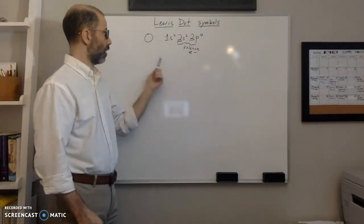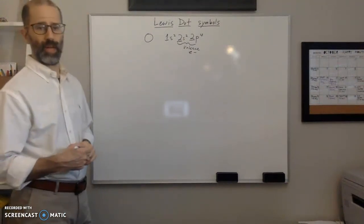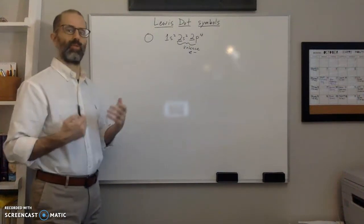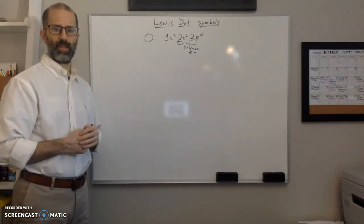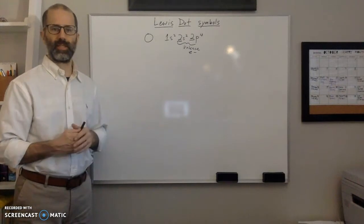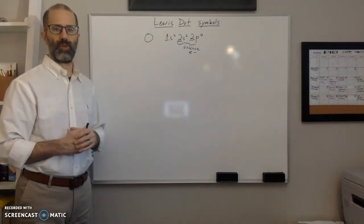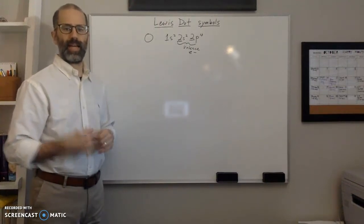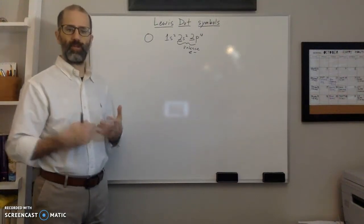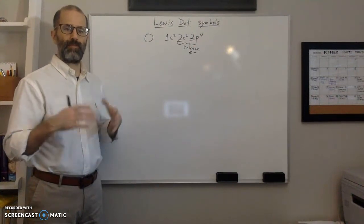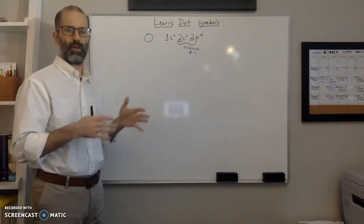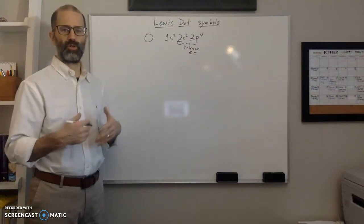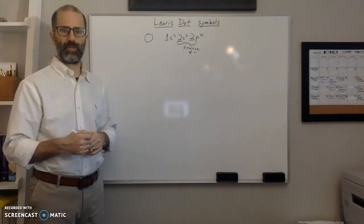We've learned to draw the full electron configuration, but there's a way to represent just the valence electrons. We want to represent only valence electrons because that's where all the action is — the center of reactions. Everyone wants to be like the noble gases. In the Lewis model, bonding occurs because of either the transfer or the sharing of valence electrons, and the Lewis symbol is a nice way to depict that transfer or sharing simply.